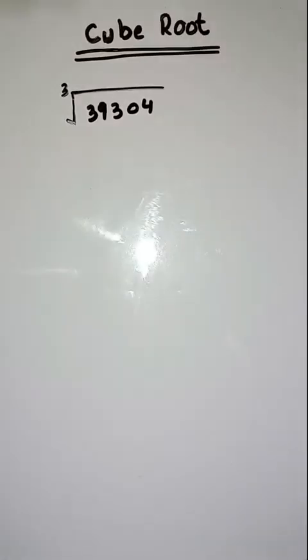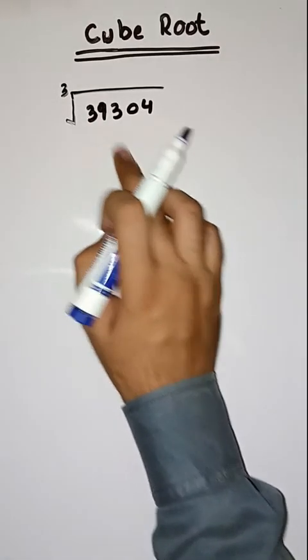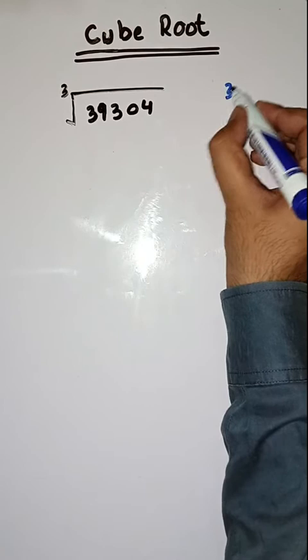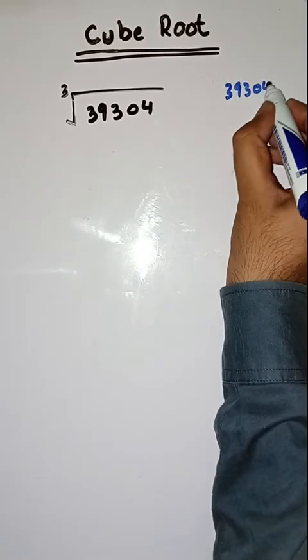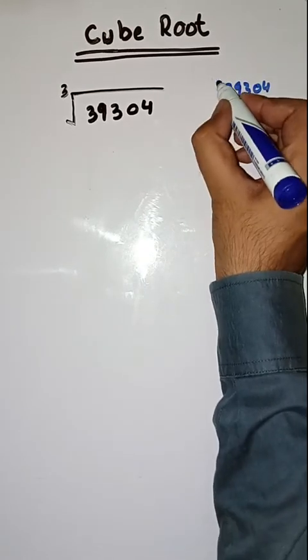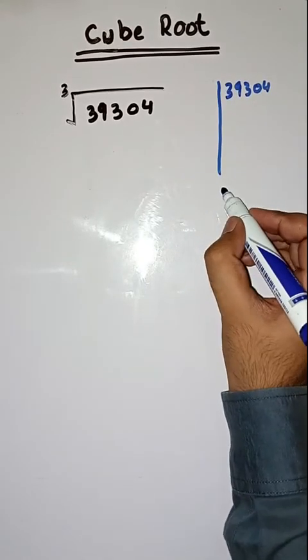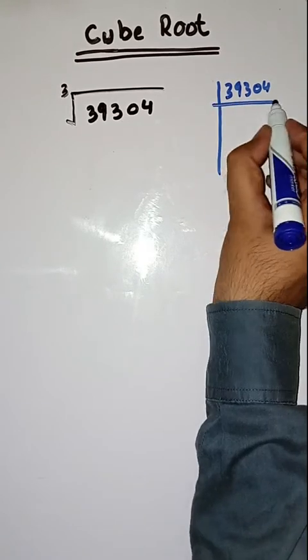So what will be the first step? First we have to find the prime factors of this number, 39304. Then we will find its cube root. Prime factors of 39304.